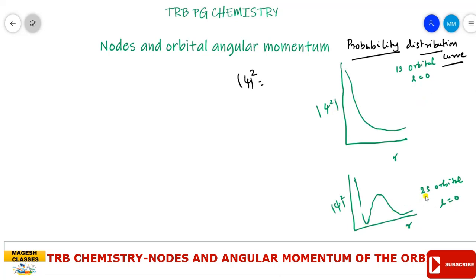For the 2s orbital, we can plot psi squared versus r. As in the case of the 1s orbital, the value of psi squared is high when the radius is very close to the nucleus. As it increases, it reaches a particular space where psi squared is zero — that is the node. So the 2s orbital has nodes.